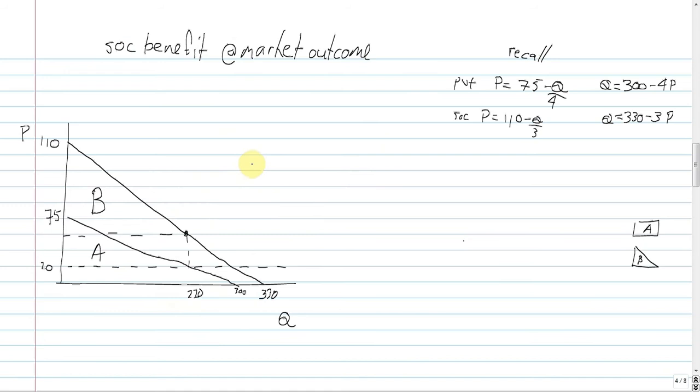Fortunately, we have two equations relating price and quantity. So it's better to pick the price as a function of quantity, because we know the quantity. So we have 110 minus, and we're going to use our market quantity. And that price is going to be 36 and 2 thirds.